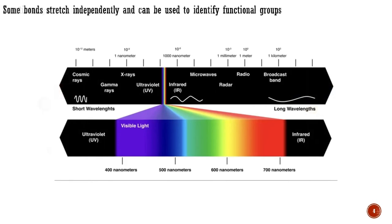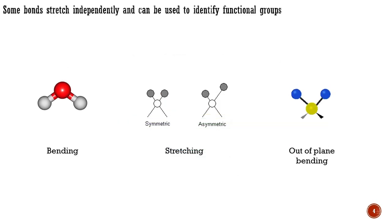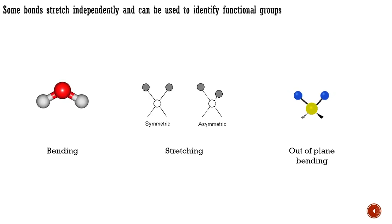When the carbon skeleton of a molecule vibrates, all the bonds stretch and relax in combination, and these absorptions are unhelpful. However, some bonds stretch independently of the rest of the molecule, and we can use these to identify functional groups. This occurs if the bond is either much stronger or weaker than others nearby, or between atoms that are much heavier or lighter than their neighbors. In other words, stronger bonds vibrate faster, and so do lighter atoms. The relationship between the frequency of the bond vibration, the mass of the atoms, and the strength of the bond is essentially the same as Hooke's law for a simple harmonic oscillator.